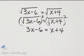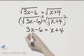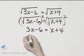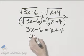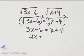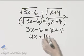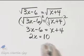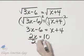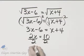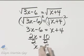This is now a linear equation, which we will solve. 3x minus x, if I subtract x from both sides, I'll have 2x. And then if I add 6 to both sides, I'll have 4 plus 6, or 10. How do I finish solving? I'll divide both sides by the coefficient of x, and I'll have x is equal to 5.